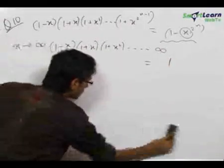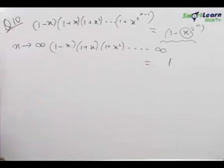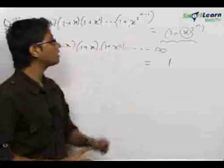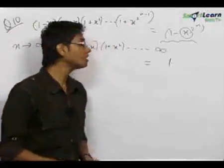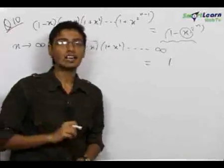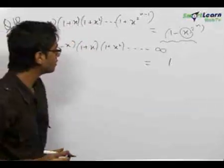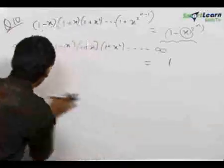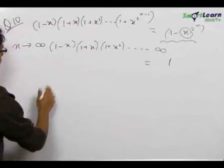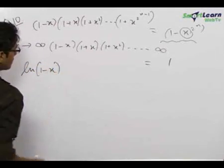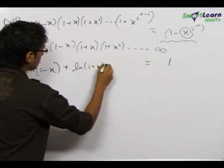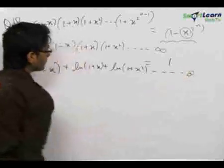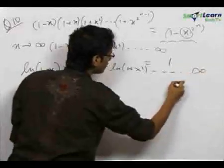We are not taking the ln of the product up to n terms; rather, we are finding the product up to infinite terms first and then taking ln. If the question had specified up to n terms, we would have taken ln first and then differentiated. Now taking ln on both sides: ln(1-x) + ln(1+x) + ln(1+x²) + ··· up to infinity = ln(1) = 0.